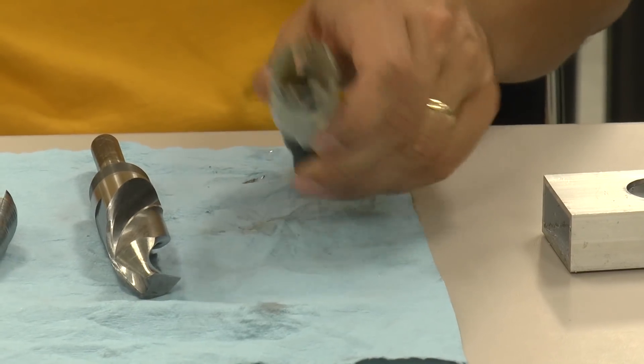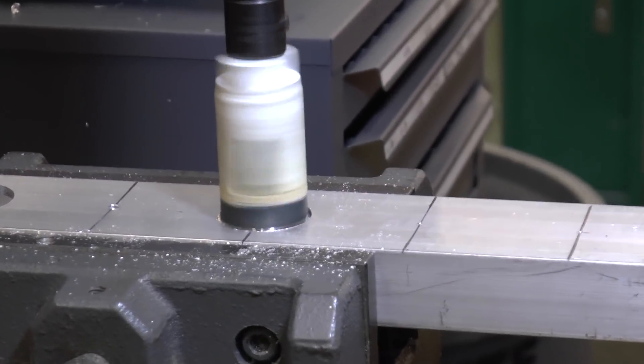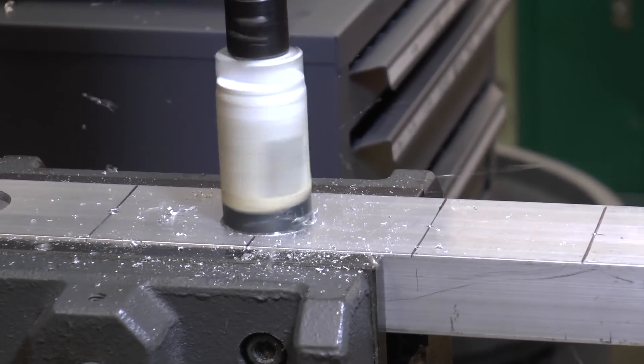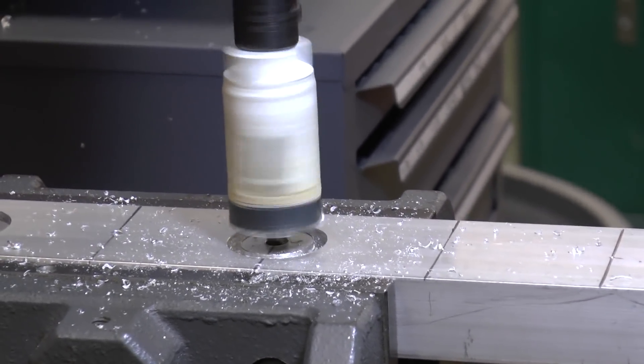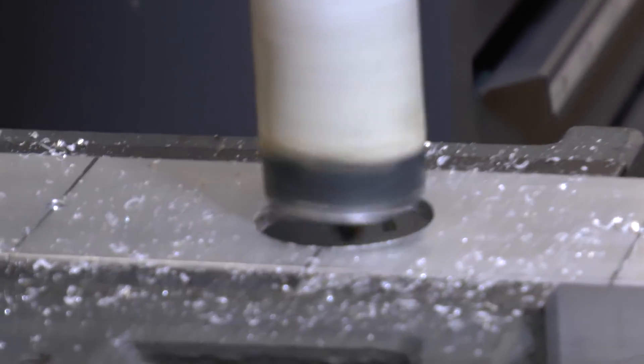The first of those, which actually gave the worst result, was a one and one-eighth inch hole saw that you would normally use for putting holes in plywood. We didn't think that was going to give us a good result, but we wanted to try it just to see what we would get.